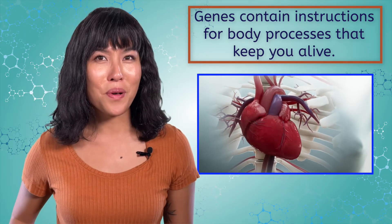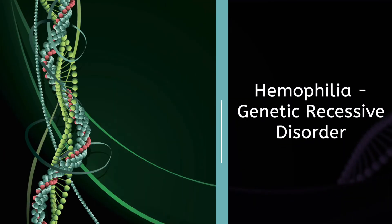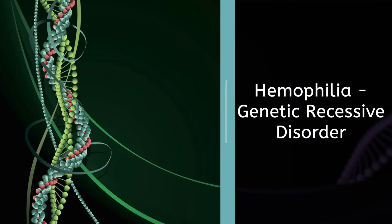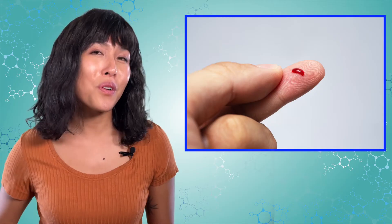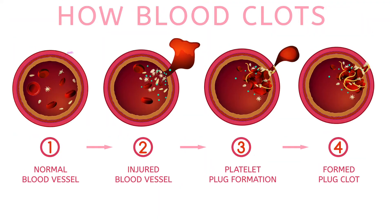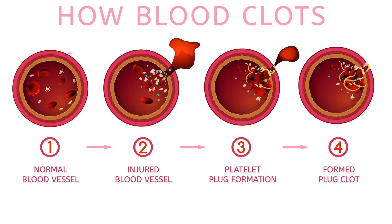Let's look at one example. Have you ever gotten a paper cut? It may bleed, but usually only for a minute or two. Your blood produces clotting factors that will plug the hole and stop the bleeding. These factors are activated in step one. Platelets form a plug in step two, and by step three, the cut is sealed, at least temporarily. This all relies on protein that is produced by a certain gene.